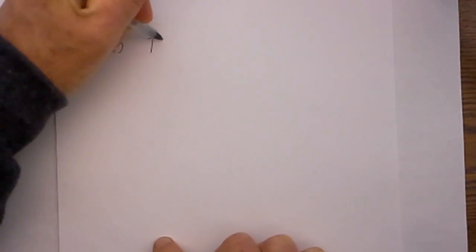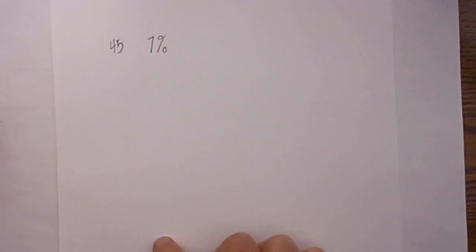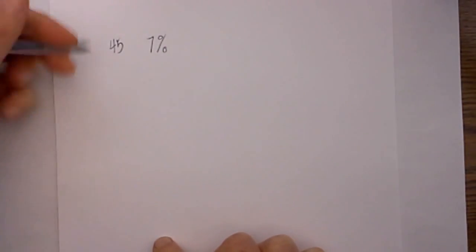Welcome to Moomoo Math where we upload a new math video every day. This first problem is we have a price of $45 and then we have a sales percentage of 7%.